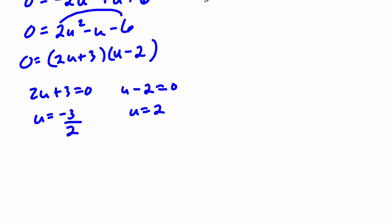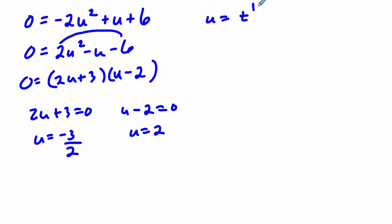Now, two things could happen. 2U plus 3 could equal 0, or U minus 2 could equal 0. So if U minus 2 equals 0, U equals 2. And subtract 3 divided by 2, U equals negative 3 halves. But remember, we're trying to solve for T. And in our case, U equals T to the 1 half.